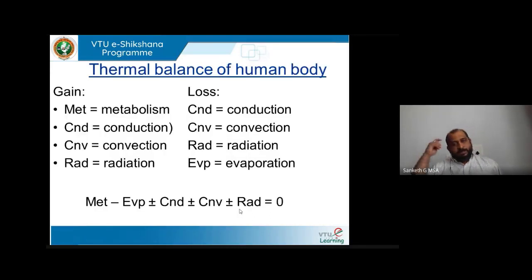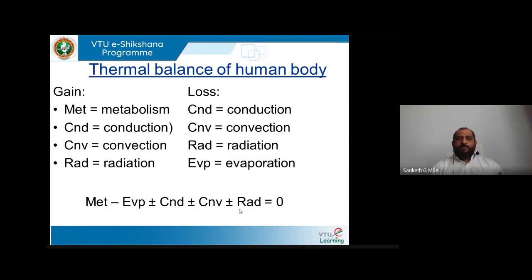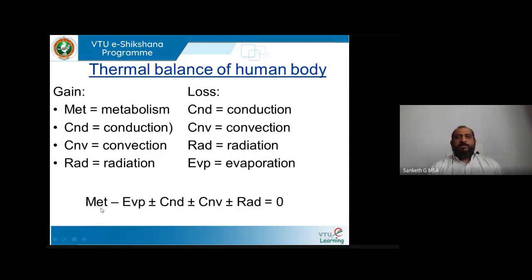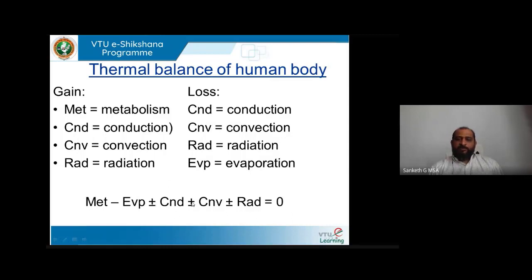The human body gains or loses heat by various means. Metabolism always produces heat — it never loses heat. Evaporation always loses energy from the human body; we cannot gain heat by evaporation. Conduction involves heat gain or loss through physical contact with the earth, furniture, objects, or appliances. Convection can bring hot air to heat the body or cold air to cool it. Radiation can provide heat gain from sunlight or other sources, or radiate excess heat away.